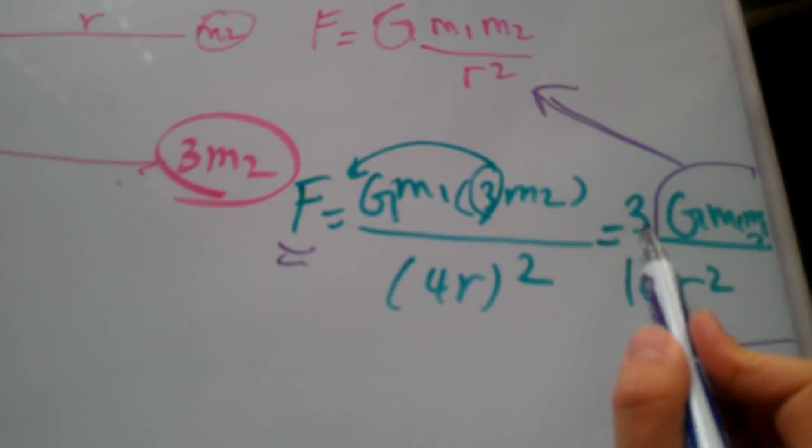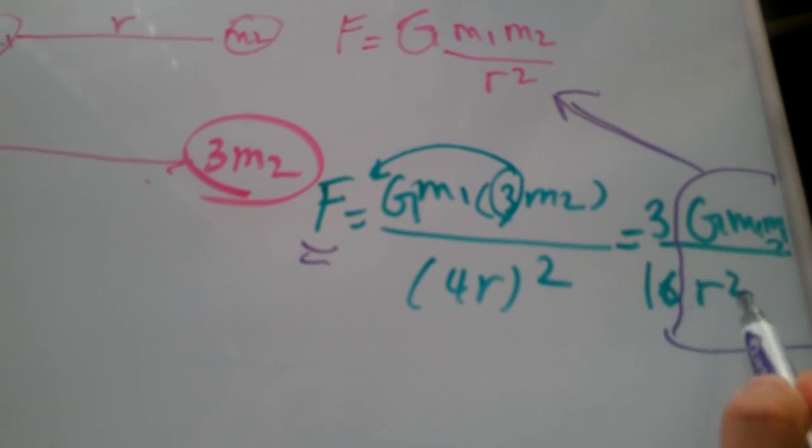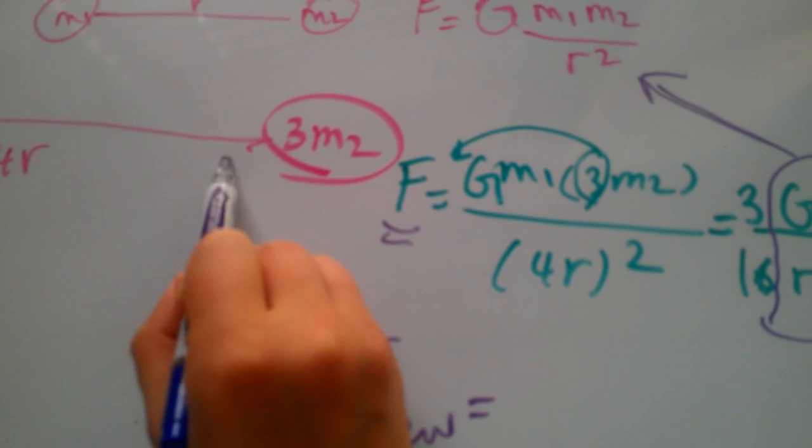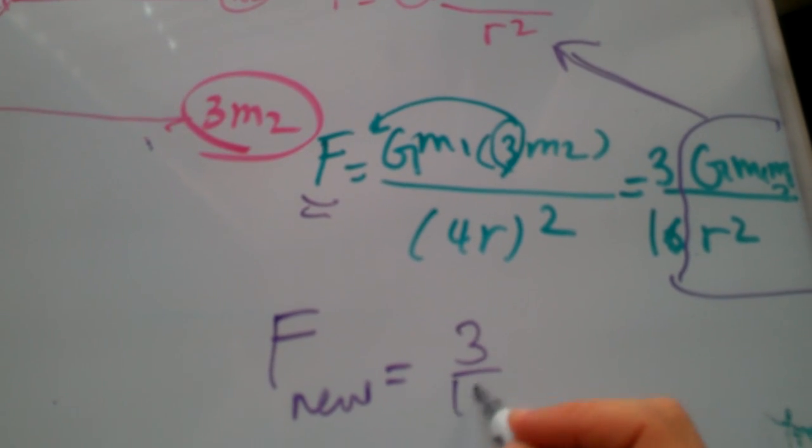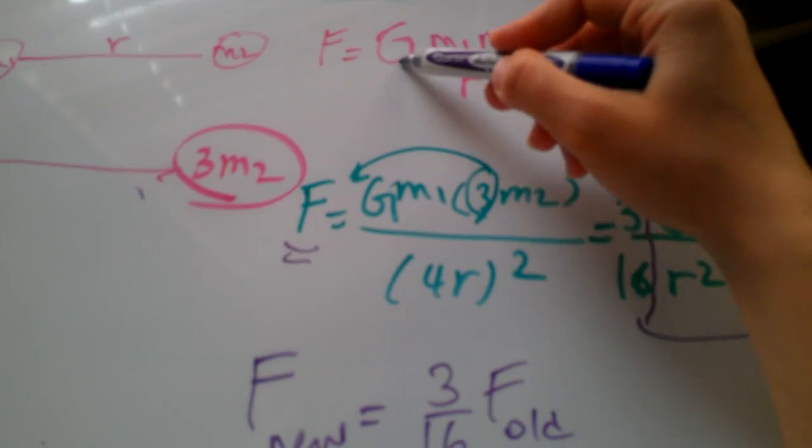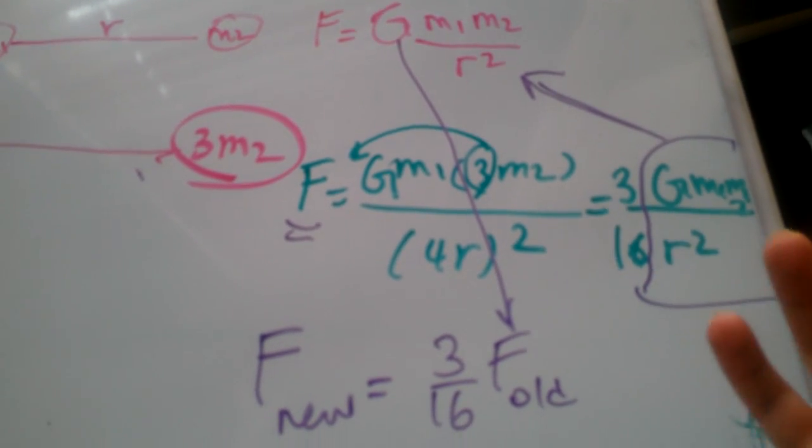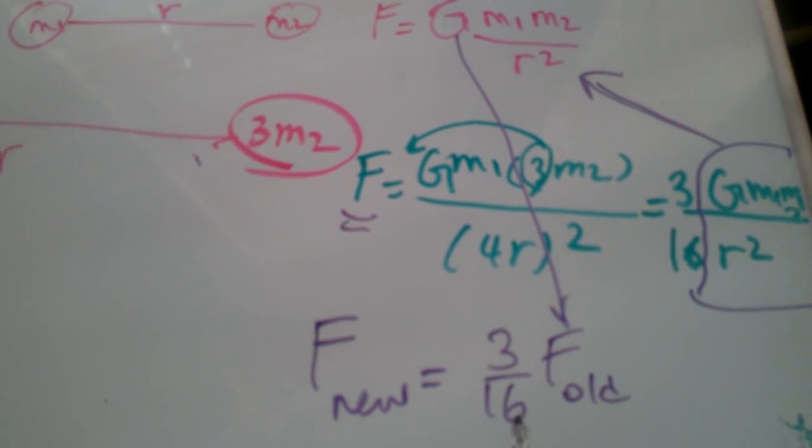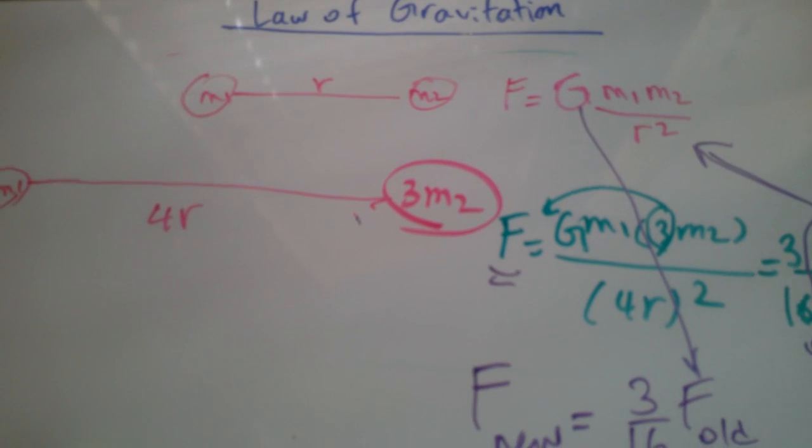So my new F is 3 sixteenths of my old. So my new F, the second scenario, is 3 sixteenths of the old one. So the gravitational force changes by 3 sixteenths, and then you go from there.